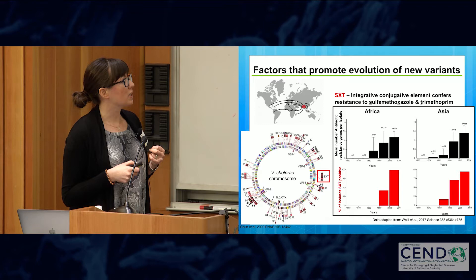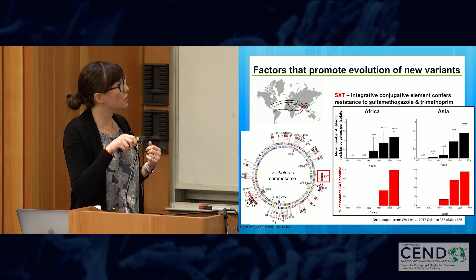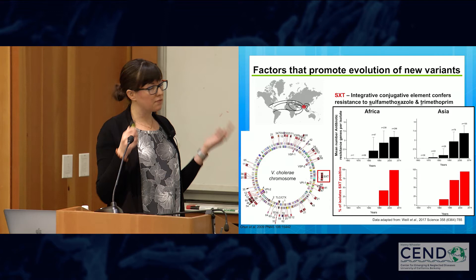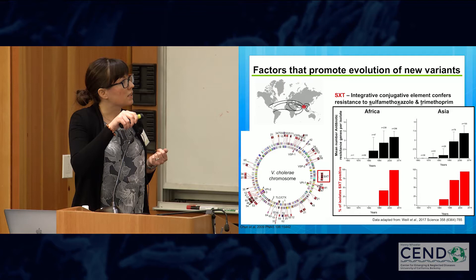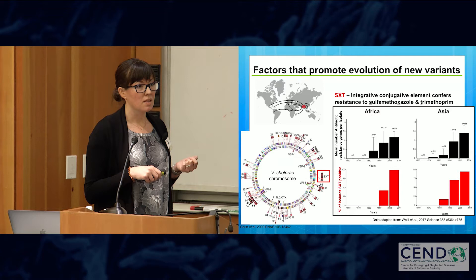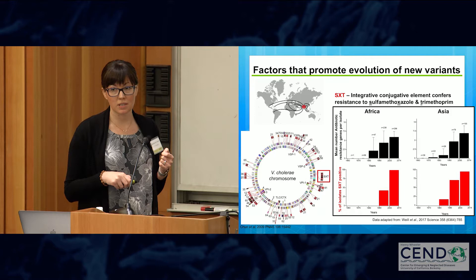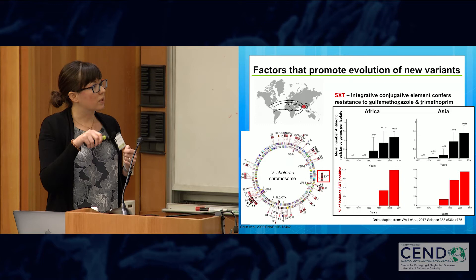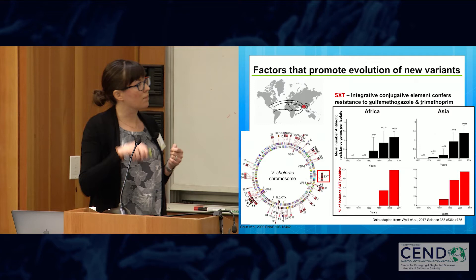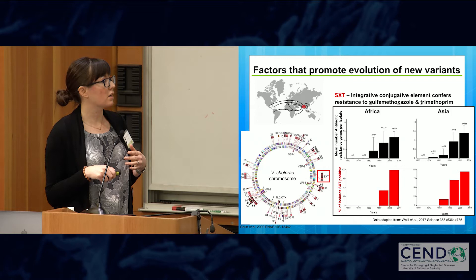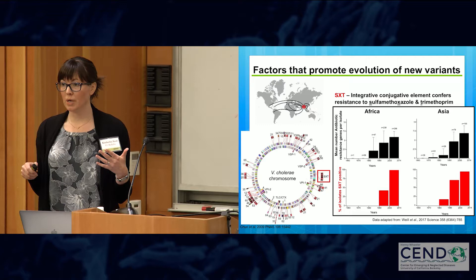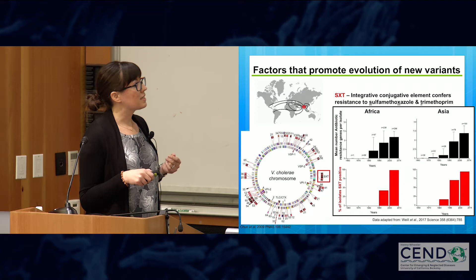Looking deeper, mobile genetic elements are playing a key role in the evolution of resistance. This is a schematic of one of the two chromosomes of Vibrio cholerae, showing the different mobile genetic elements found in different epidemic strains. One related to antibiotic resistance is the SXT element — an integrative conjugative element first described in a strain from India in the early 1990s, conferring resistance to drugs previously used to treat cholera. SXT first arose in Asian isolates and has now gone to fixation in that population, with five different SXT versions identified in seventh pandemic strains to date.